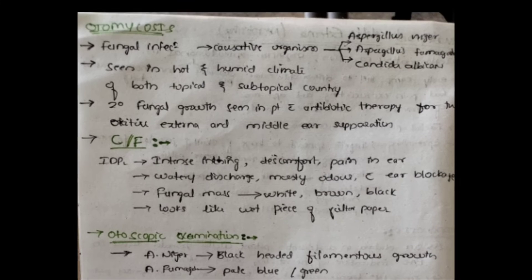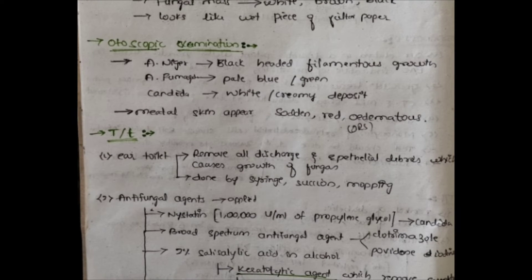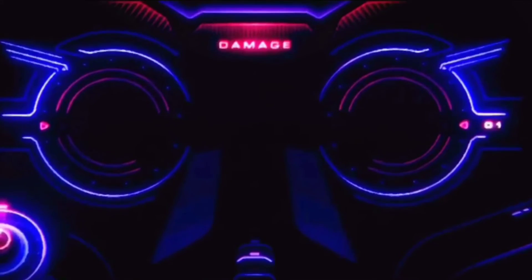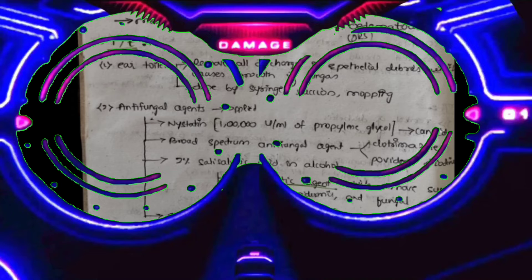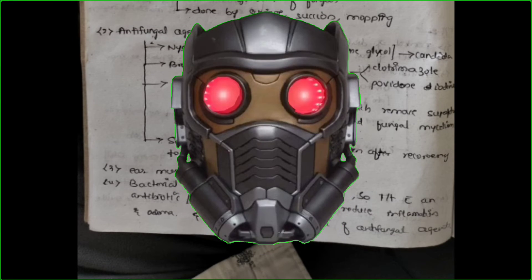To summarize: otomycosis is a fungal infection of the external auditory canal. Causative organisms are Aspergillus niger (black color), Aspergillus fumigatus (blue or green color), and Candida albicans (white color). It is seen in tropical and subtropical regions requiring moist and humid conditions. Clinical features are intense itching, discomfort, pain, watery discharge, and ear blockage, with white, brown, or black fungal colonies in the ear. Treatment includes ear toilet by suctioning, mopping, or syringing; antifungal agents like nystatin for Candida and clotrimazole or povidone-iodine as broad-spectrum agents; keratolytic agents like 2% salicylic acid; keeping the ear dry; and steroids when bacterial infection coexists to reduce inflammation.